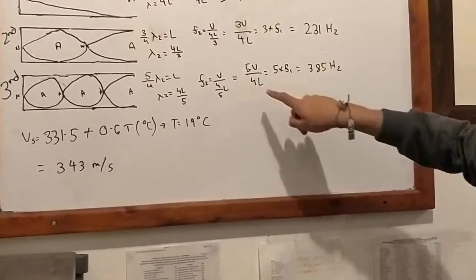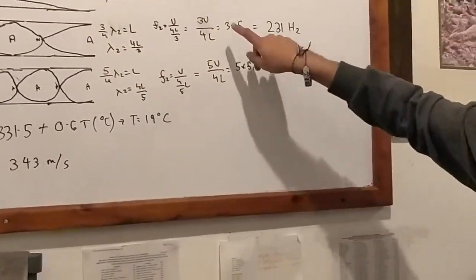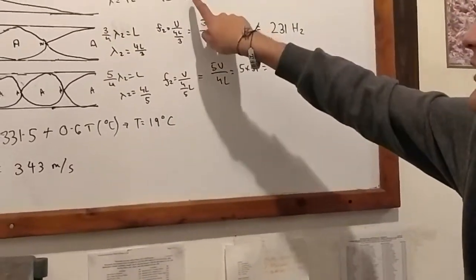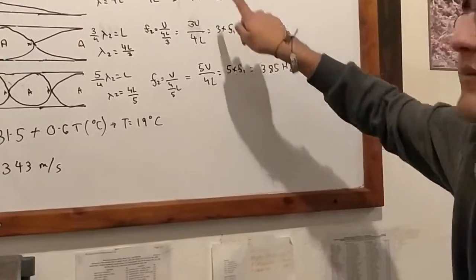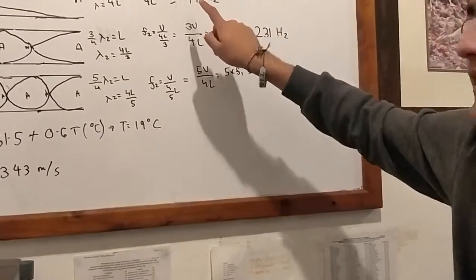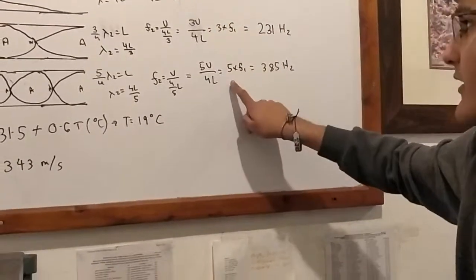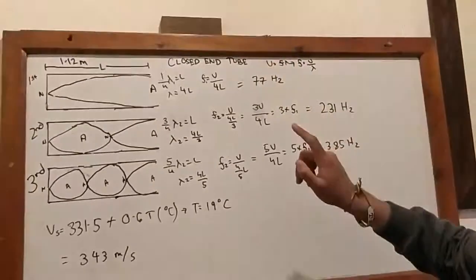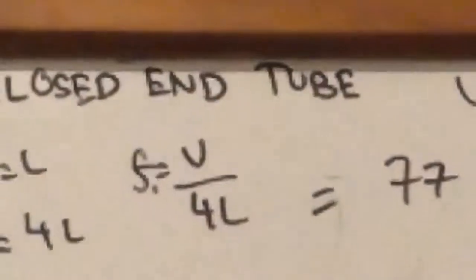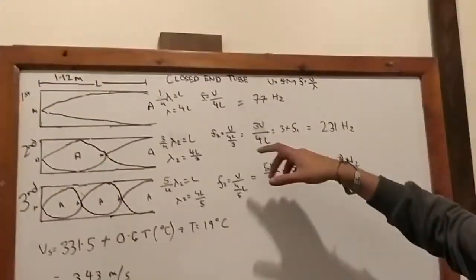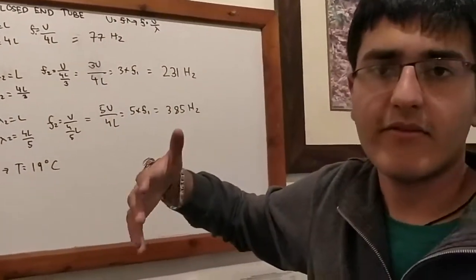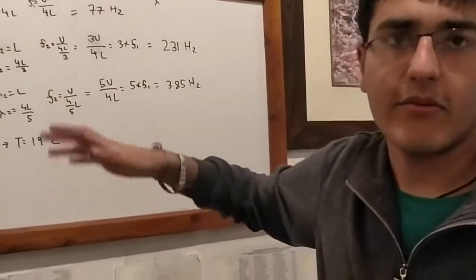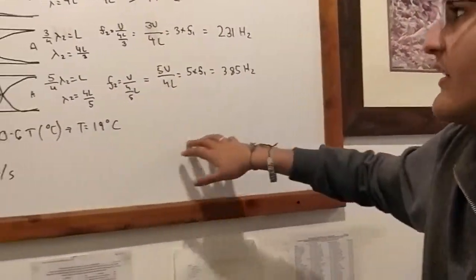If you notice a certain pattern, the second harmonic is just three times the first harmonic, and the third harmonic is five times the first harmonic. This means that every harmonic is multiplied by the consecutive odd integer from the first harmonic.